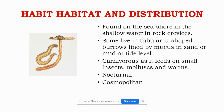Habit, Habitat and Distribution. Nereis are found on the seashore in shallow water, in crevices in the tidal zone, that means between the high tide and the low tide marks. Some of them live in tubular U-shaped burrows lined by mucus in sand or mud at tidal level, and this mucus is secreted by the worm itself. These are carnivorous and feed on small insects, mollusks and worms, nocturnal in habit, and cosmopolitan in distribution.